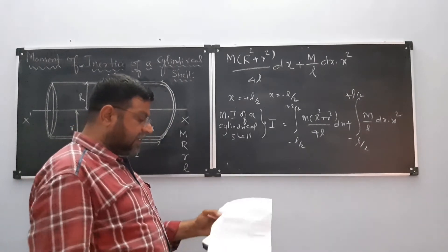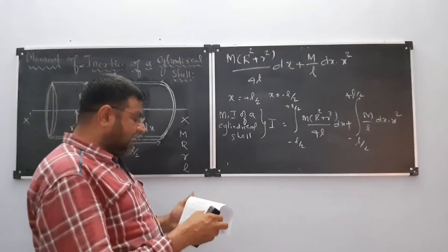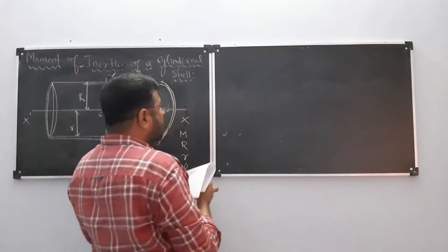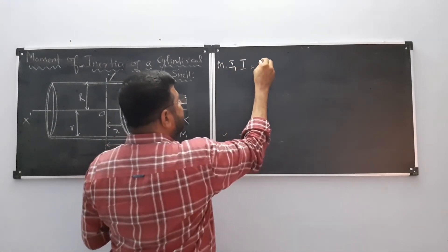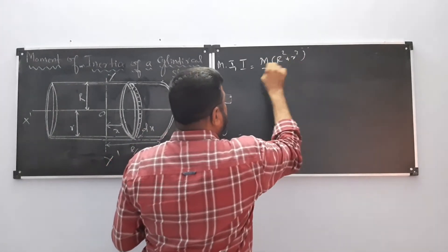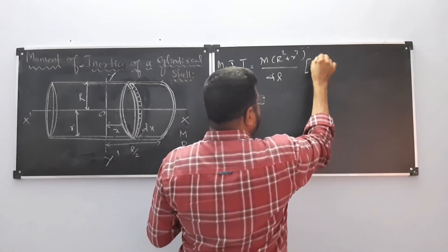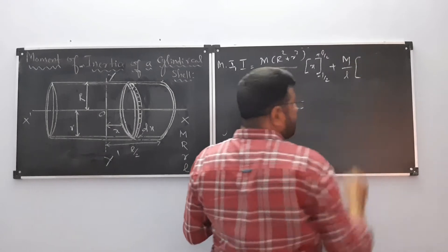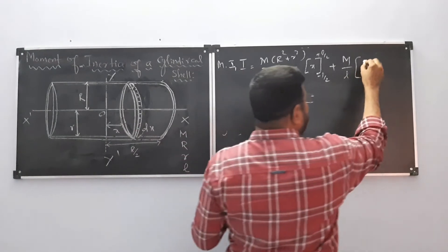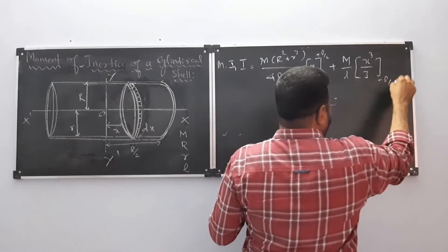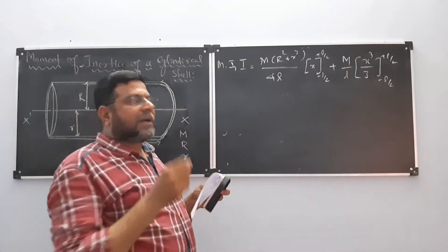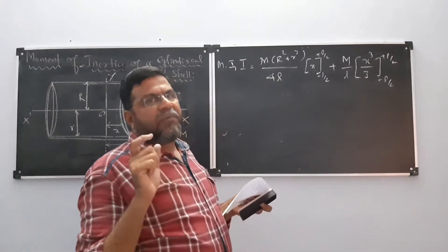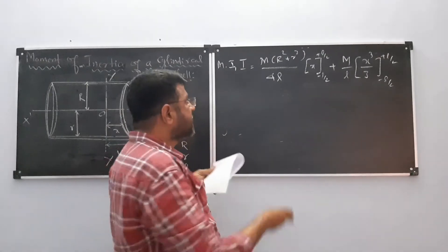We bring out the common terms. I is equal to M(R² + r²)/(4L) times the integral of dx, which evaluates to x within limits −L/2 to +L/2, plus M/L times the integral of x² dx, which gives x³/3 within limits −L/2 to +L/2. There are two terms: the first integrates dx directly, and the second integrates x² dx to get x³/3.